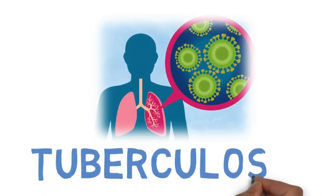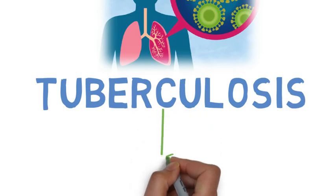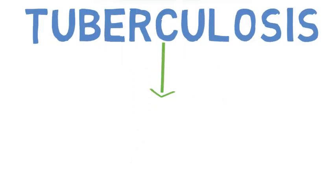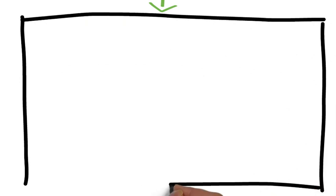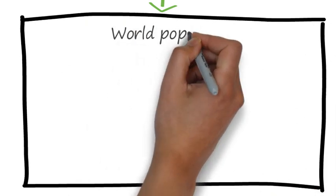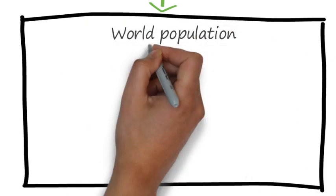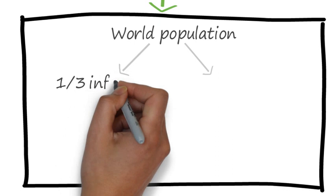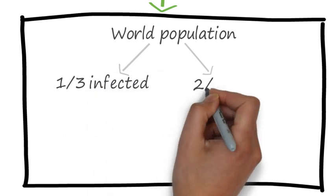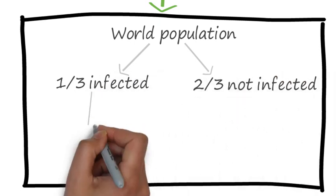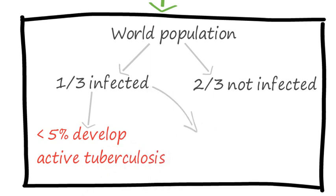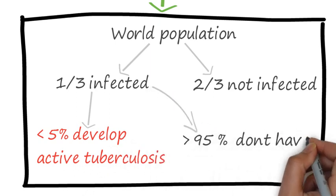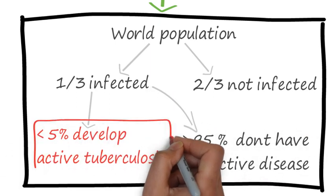Tuberculosis is an airborne infection that spreads via respiratory droplets. Only a small amount of bacteria need to be inhaled to develop an infection, but not all those who are infected develop active disease. It is estimated that one-third of the world's population are infected with tuberculosis, and upon initial contact with infection, less than 5% of patients develop active disease.